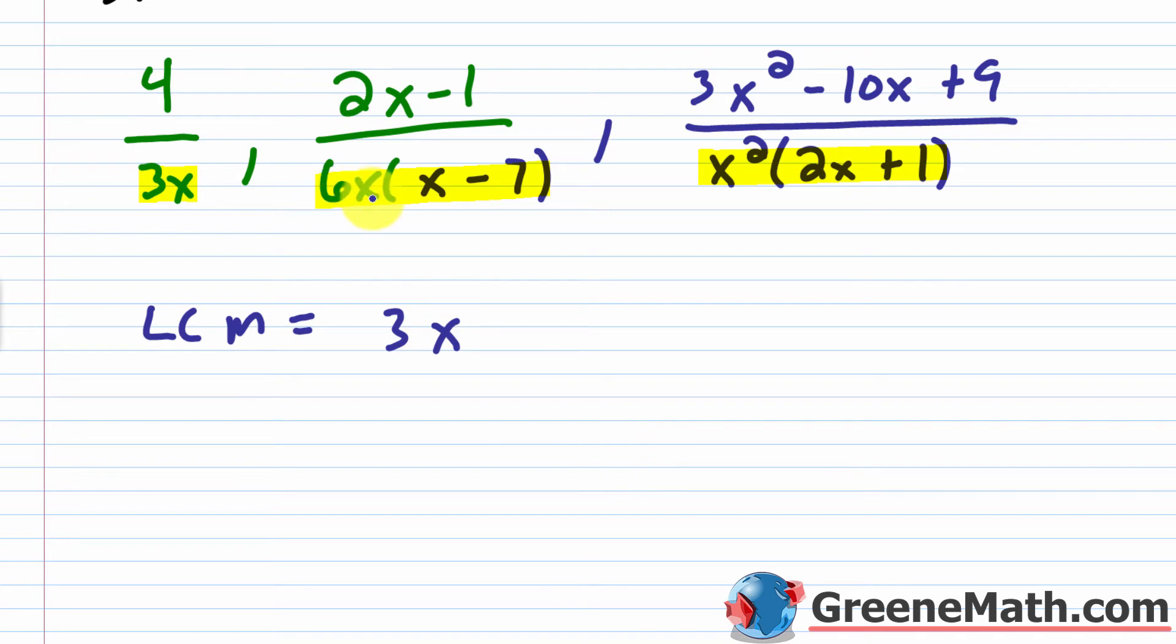Then here I have 6x. Well, what is 6x? 6x is really 3 times 2 times x. Is there a duplicate involved? Well, yeah, I have a 3 here and a 3 here. So I don't need to put another 3 in here, because I always go with the largest number of repeats. There's one 3 in here, there's one 3 in here, the largest number of repeats is 1. So I don't need to add another 3.